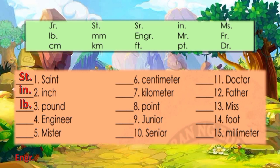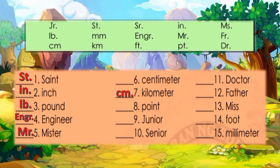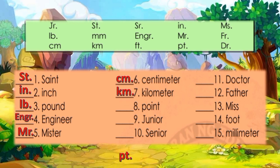Number 5, Mr. — MR. Number 6, centimeter — CM. Correct. Number 7, kilometer — KM. Number 8, point — PT. Number 9, junior — JR. Number 10, senior — SR.